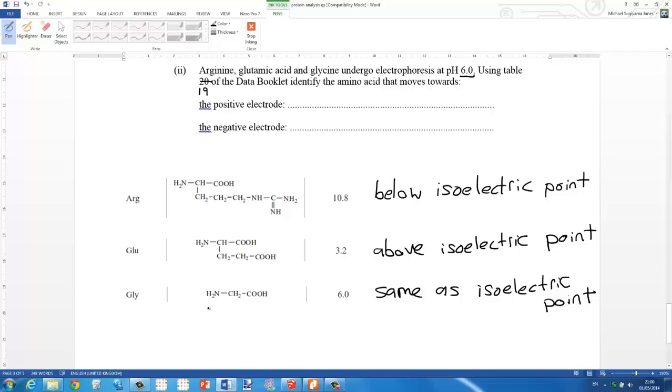Because glycine forms a zwitterion there will be no movement in the electric field.